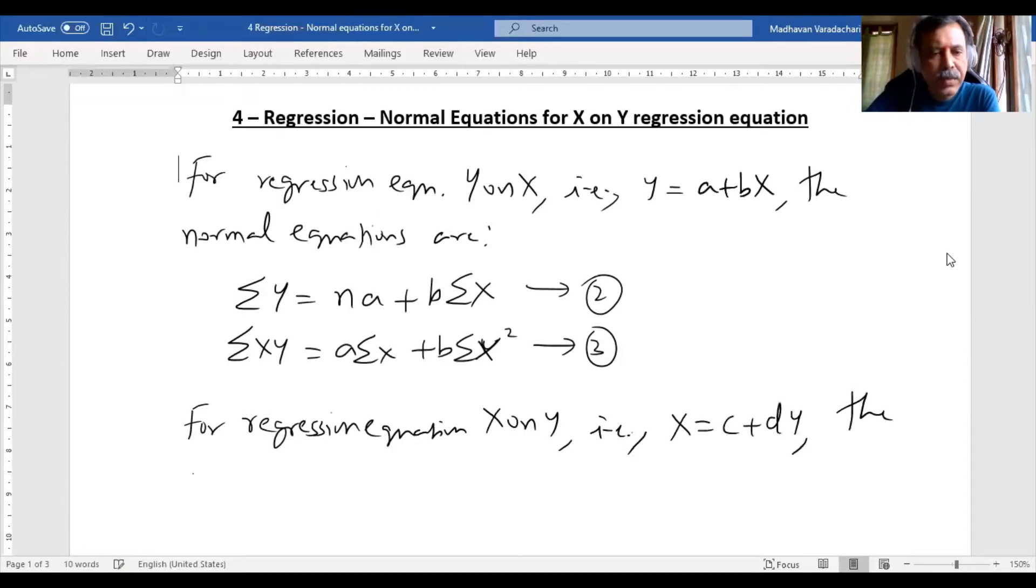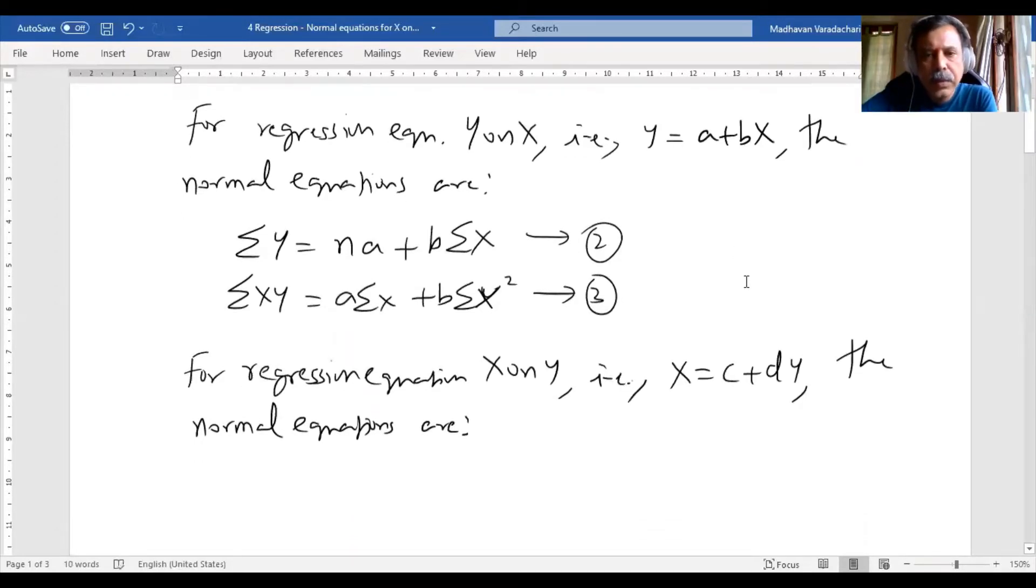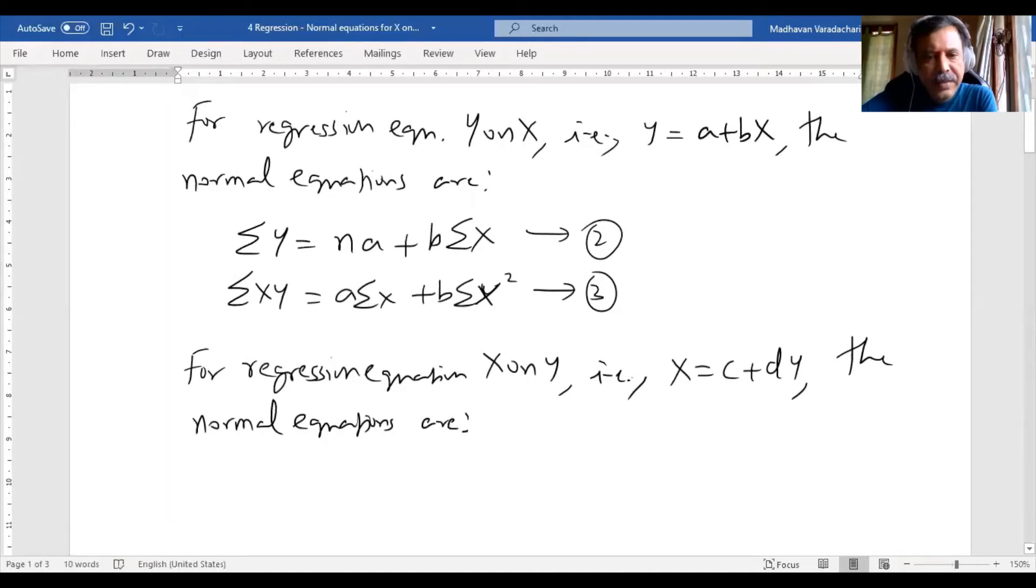The normal equations will be: instead of Y, we have X, so ΣX; instead of A, we have C, so NC; instead of B, we have D; and instead of X, we have Y, so ΣY. This gives us ΣX = NC + DΣY. Let us call this equation 4.